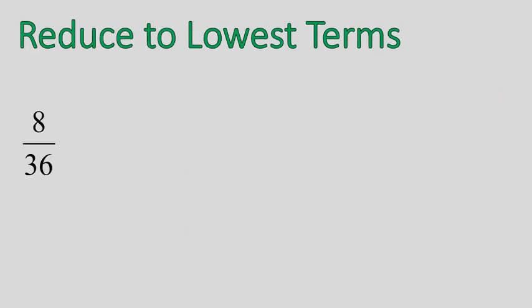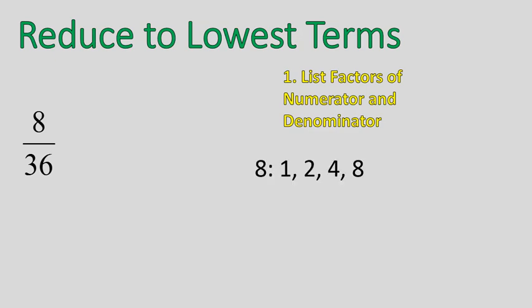If I have 8 over 36, I'm going to list the factors of the numerator and denominator. The factors of 8 are 1, 2, 4, and 8. The factors of 36, there's a couple more of them, 1, 2, 3, 4, 6, 9, 12, 18, and 36.